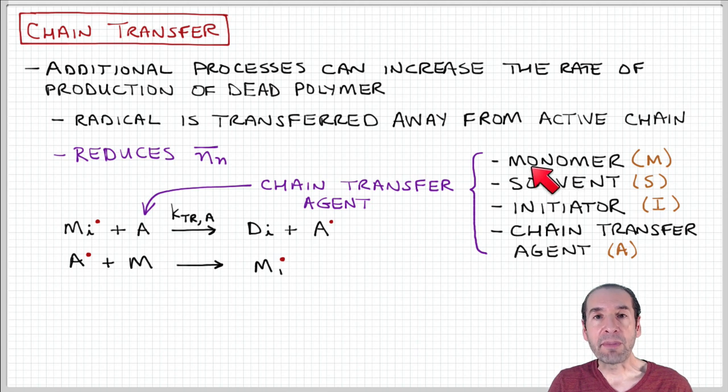Now these chain transfer agents can be different things. It could be transferred to another monomer, could be transferred to the solvent, transferred to the initiator, or some other chemical that's added specifically to scavenge or compete for the free radical that is associated with the active chain.